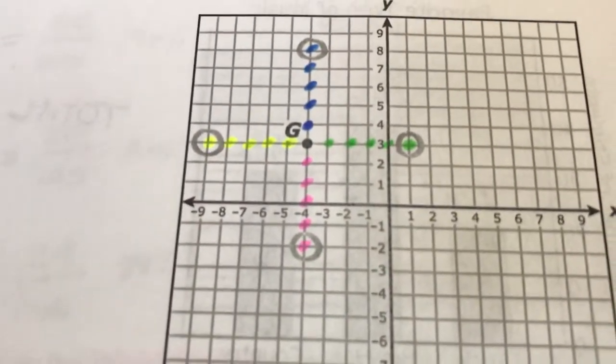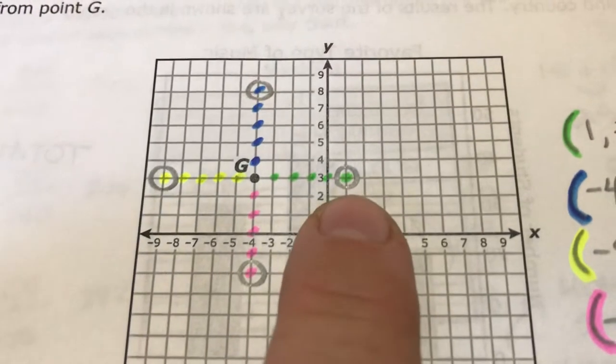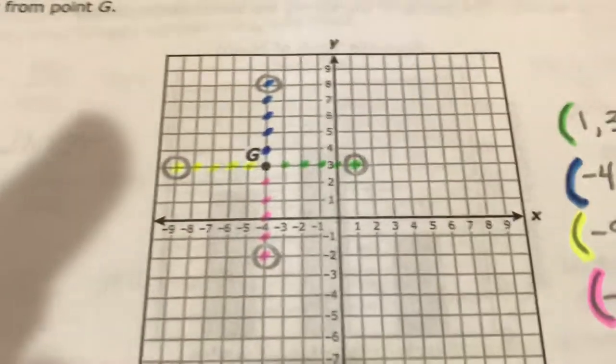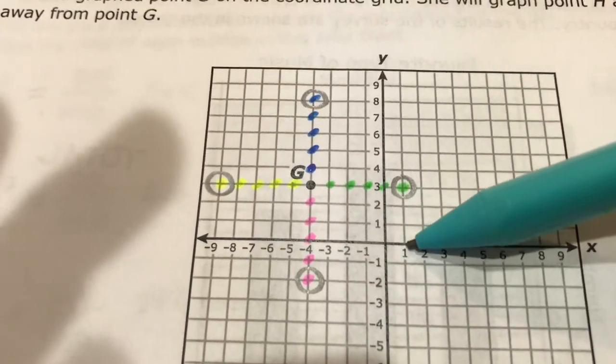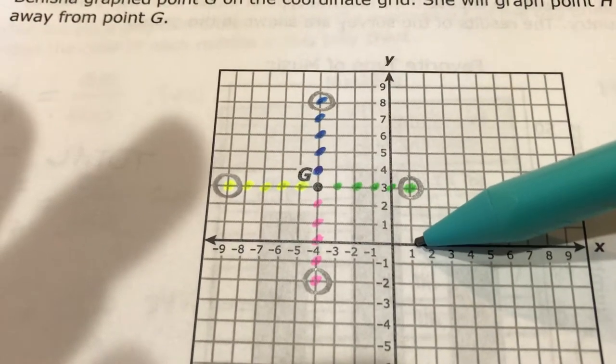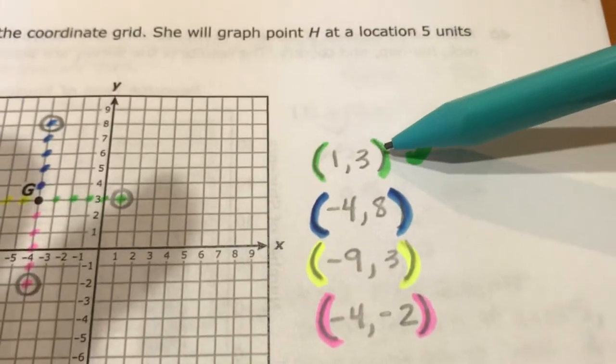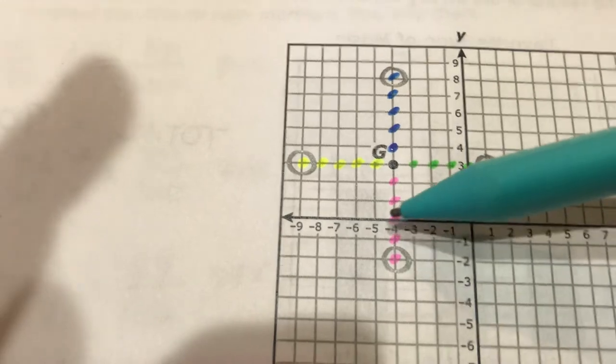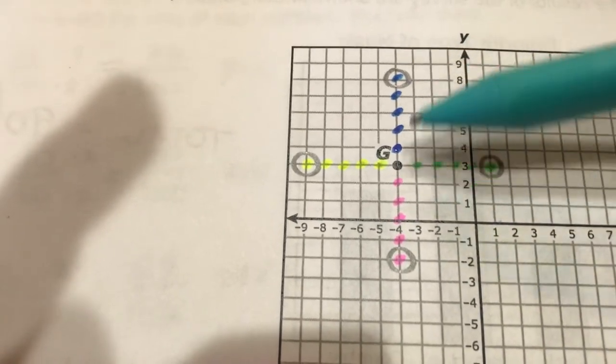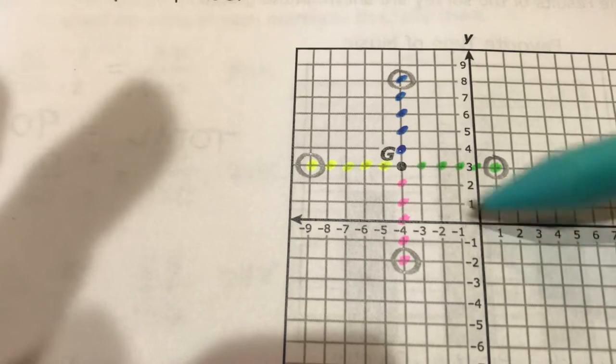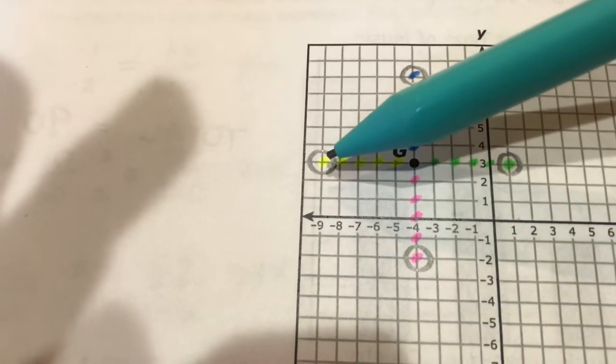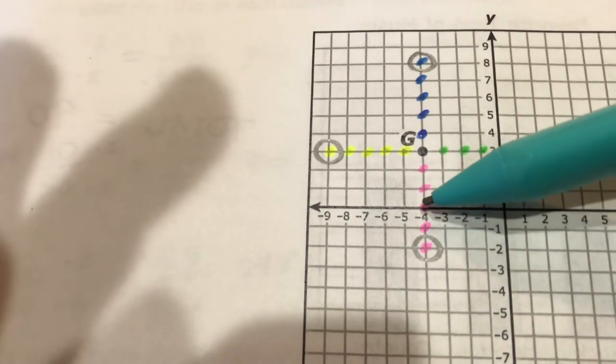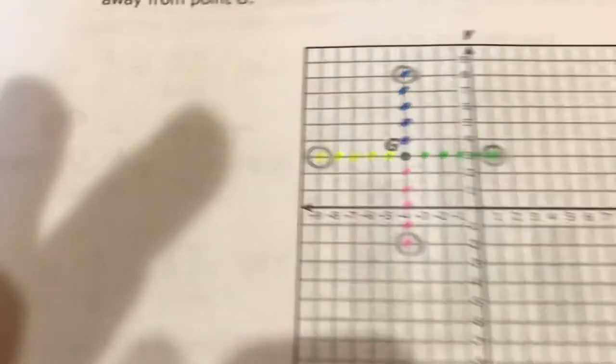So then I went and found the coordinates for each direction that I went. So this green dot that I've circled, from the origin is 1 for the x value and 3 for the y value over there. The blue value from the origin is negative 4 all the way up to positive 8.